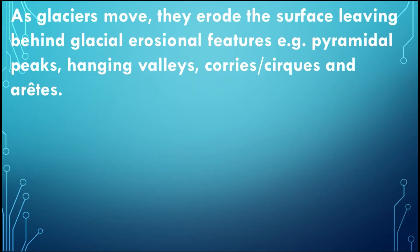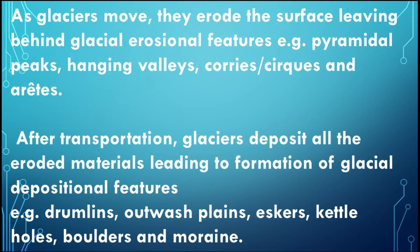As glaciers move, they erode the surface, leaving behind glacial erosion features — for example, pyramidal peaks, hanging valleys, cirques, and arêtes. Also, after transportation, glaciers deposit all the eroded materials, leading to the formation of glacial depositional features — for example, drumlins, outwash plains, eskers, kettle holes, boulders, and moraines.